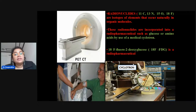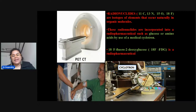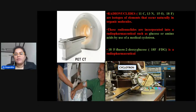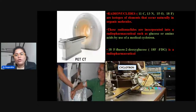In SPECT we combined technetium-99 with MDP to make a radiopharmaceutical. In PET, the combination of organic radionuclides with pharmaceuticals requires a machine called a cyclotron. Carbon, nitrogen, oxygen, or fluoride are combined with glucose or amino acids using the cyclotron. The most common radiopharmaceutical obtained is 18F-fluorodeoxyglucose (FDG), which is the most commonly used tracer in PET, just as technetium was in SPECT.